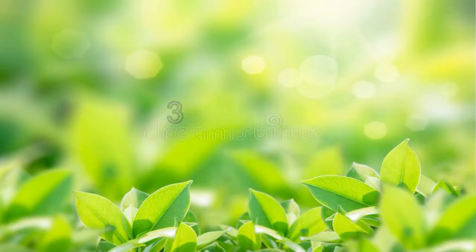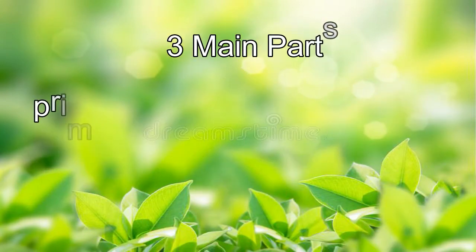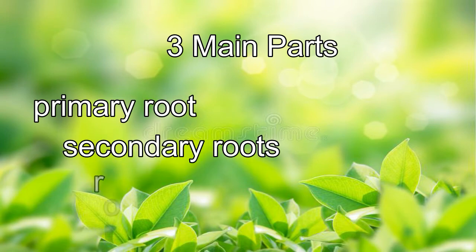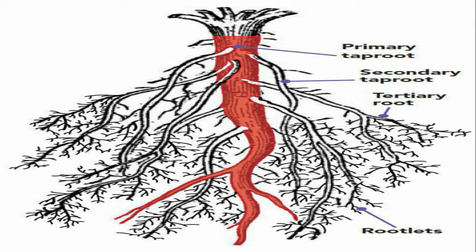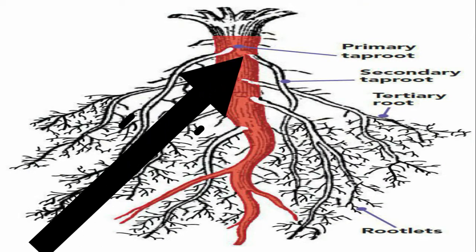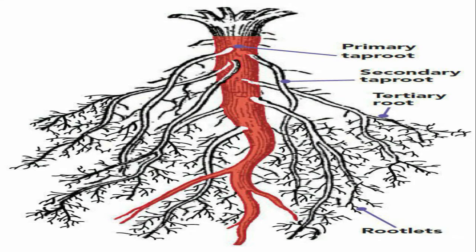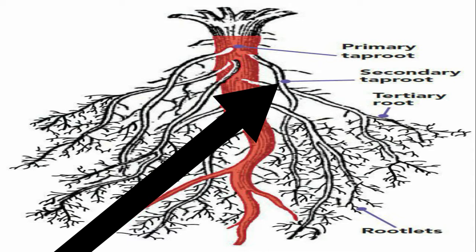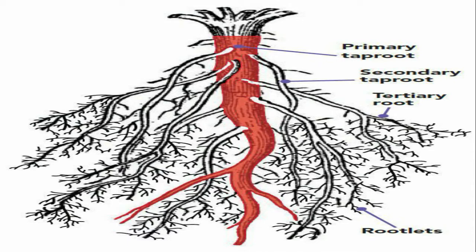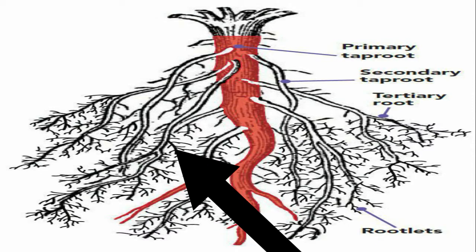Roots have three main parts: primary root, secondary roots, and root hairs. The first root to develop from the seed is the primary root. The primary root is the largest root to form in the plant. It usually grows straight down into the soil. Later, secondary roots form. Secondary roots are small roots that branch out from the primary root.